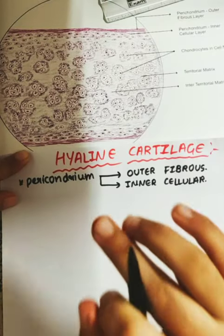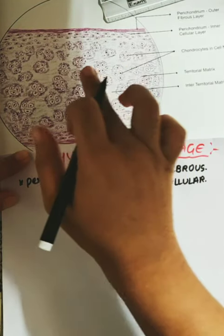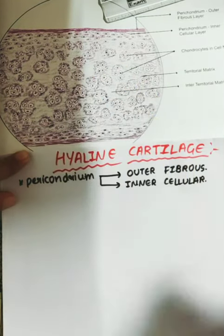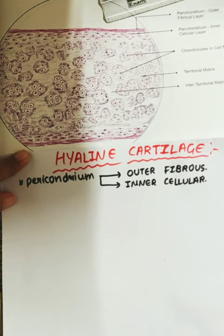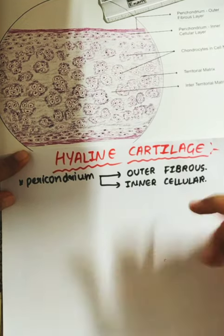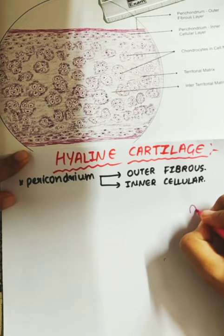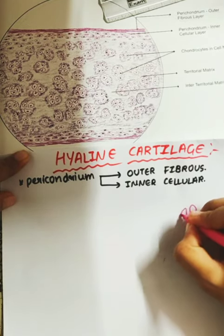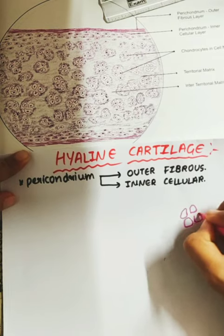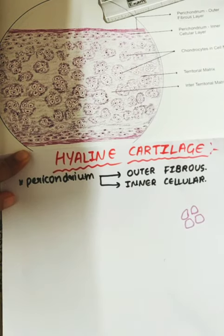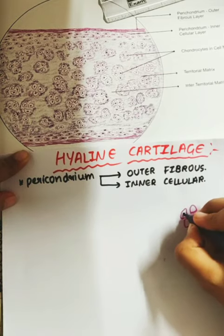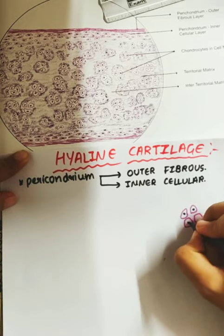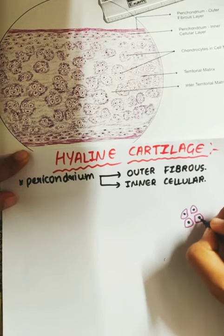You can see there are chondrocytes — four cells. These are the chondrocyte cells and they are arranged in the lacunae.